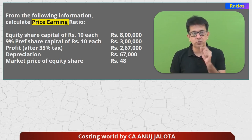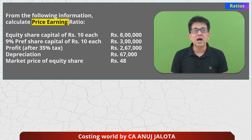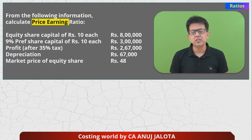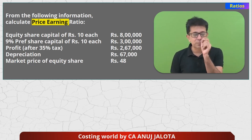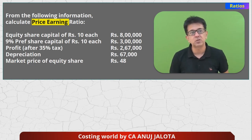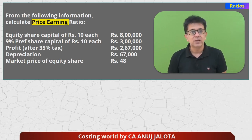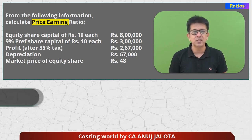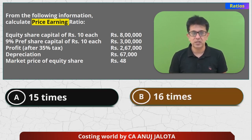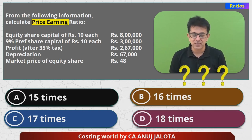9% preference share capital of ₹10 each, ₹3 lakhs — so 3 lakhs × 9% gives the preference dividend. Profit after tax is ₹2,67,000. Depreciation is ₹67,000, which must already be considered in calculating PAT. Market price of equity share is ₹48. The four options for price-earnings ratio are: 15 times, 16 times, 17 times, and 18 times. Pick up your calculator, compute it, and comment in the section below.